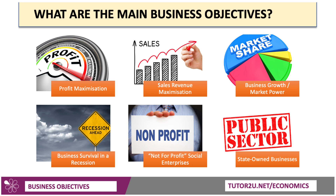Profit maximization, sales revenue maximization, trying to grow the business as fast as possible, or increase market share. Business survival might become a key objective. Many businesses are not-for-profit — they may have social aims as well as pure profit aims. And the objectives of a business may be different in the public sector with state-owned businesses in contrast to privately-owned businesses. So there's a quick summary of some of the main business objectives — of course, there are others.